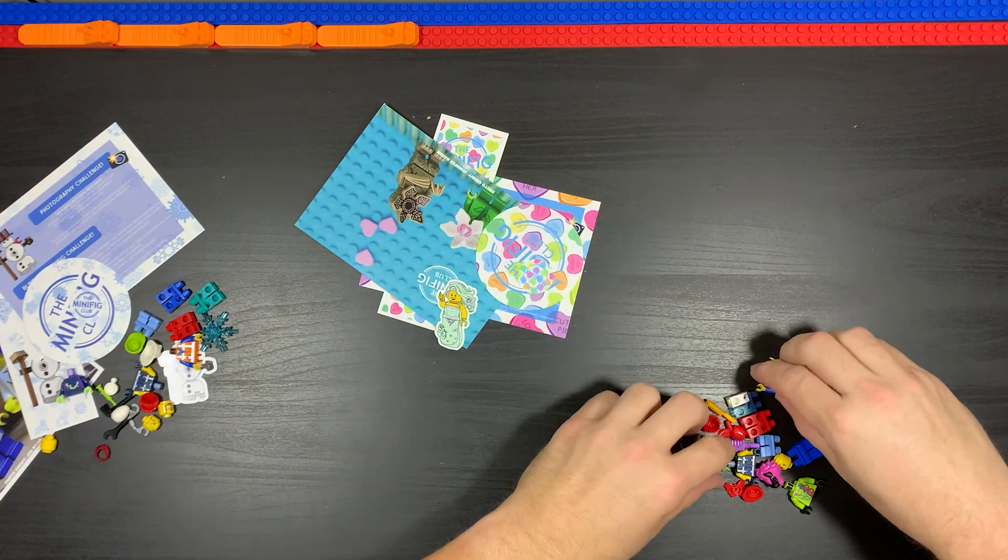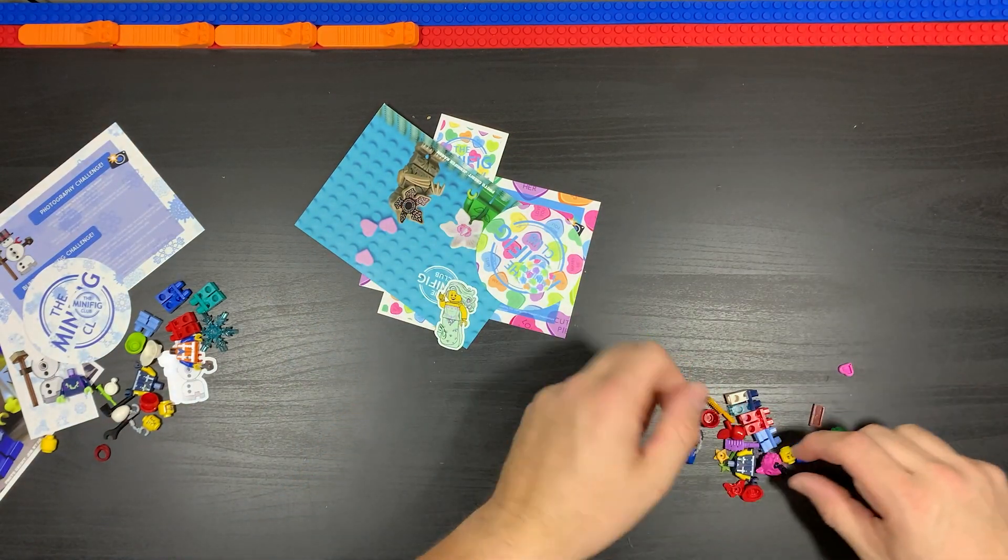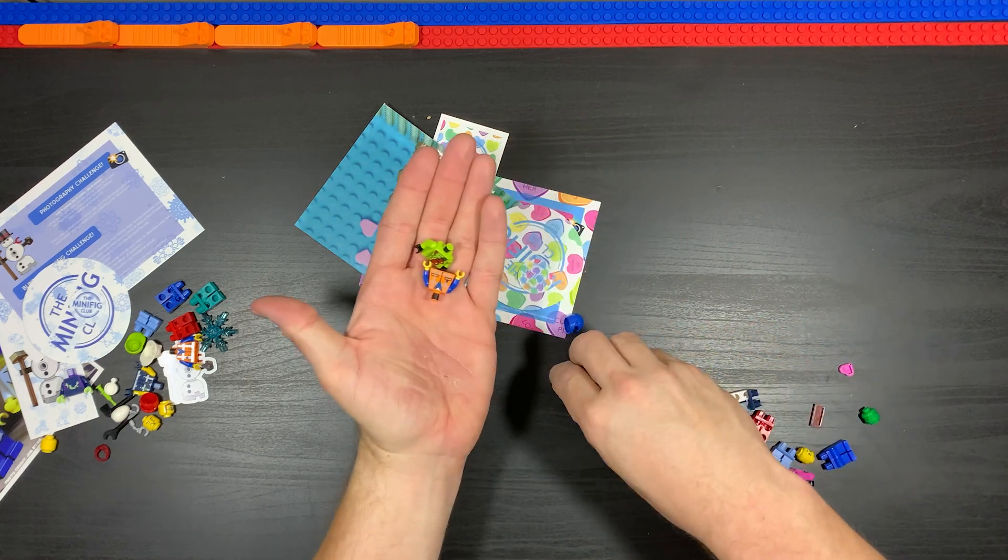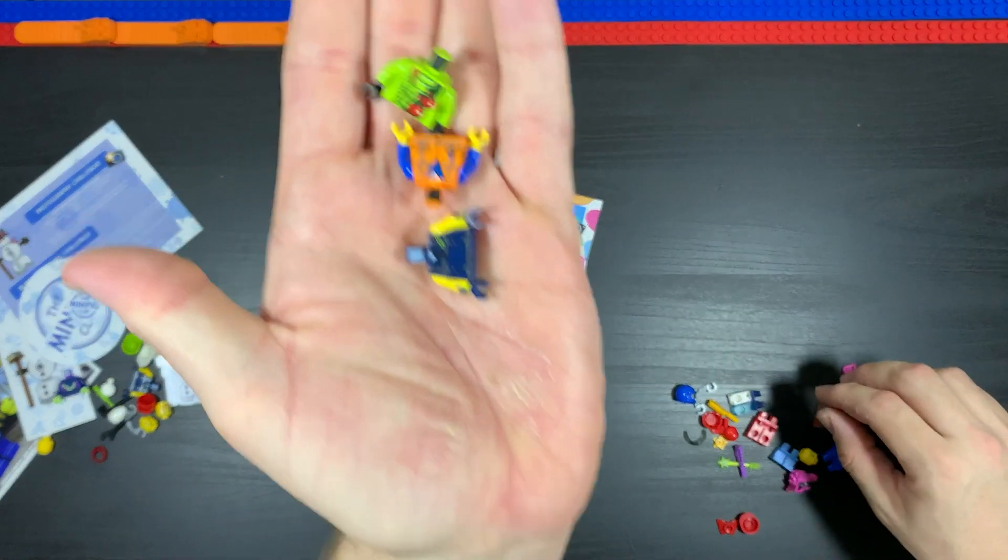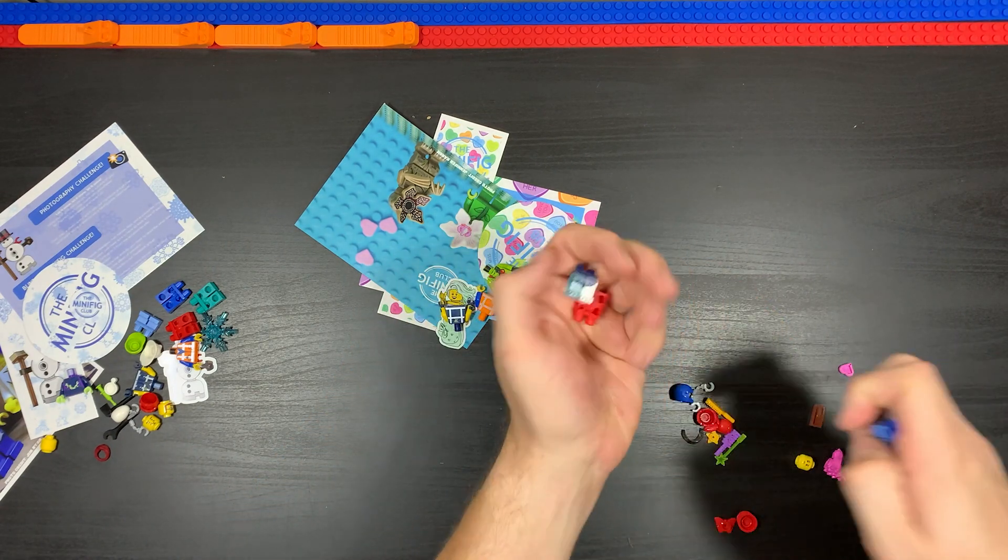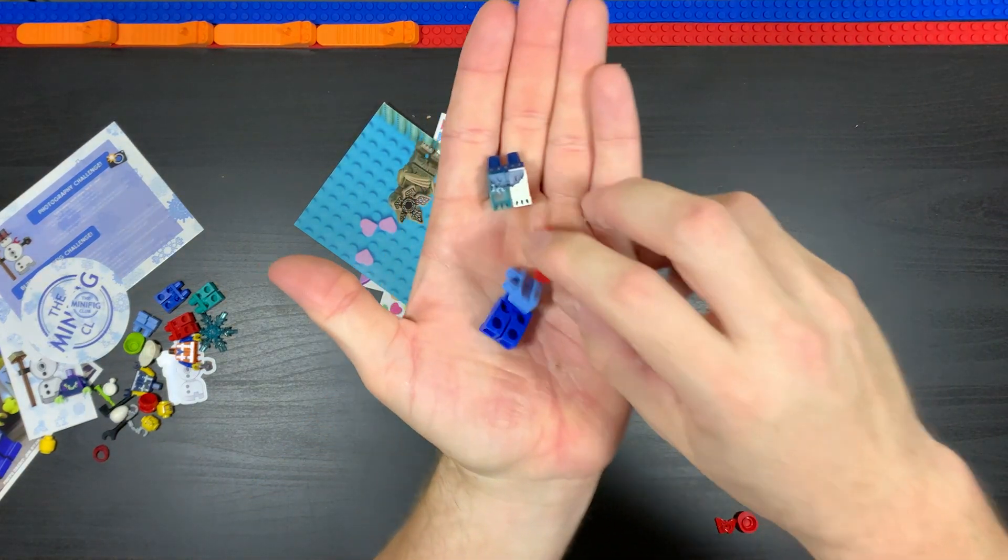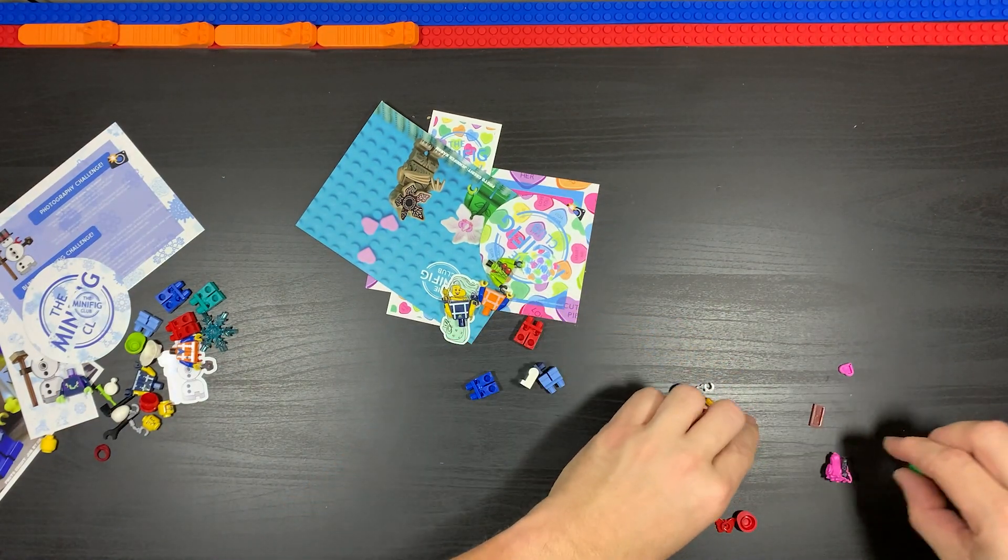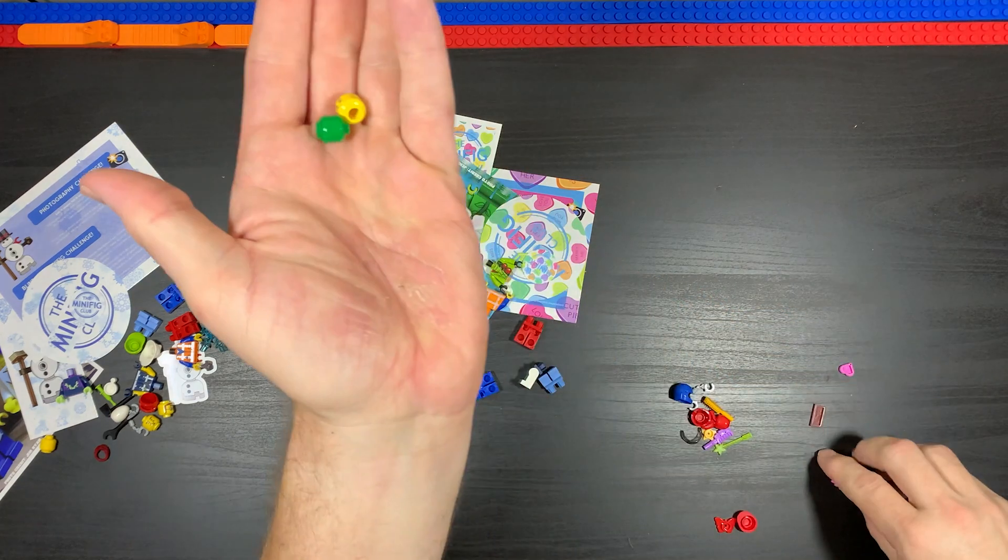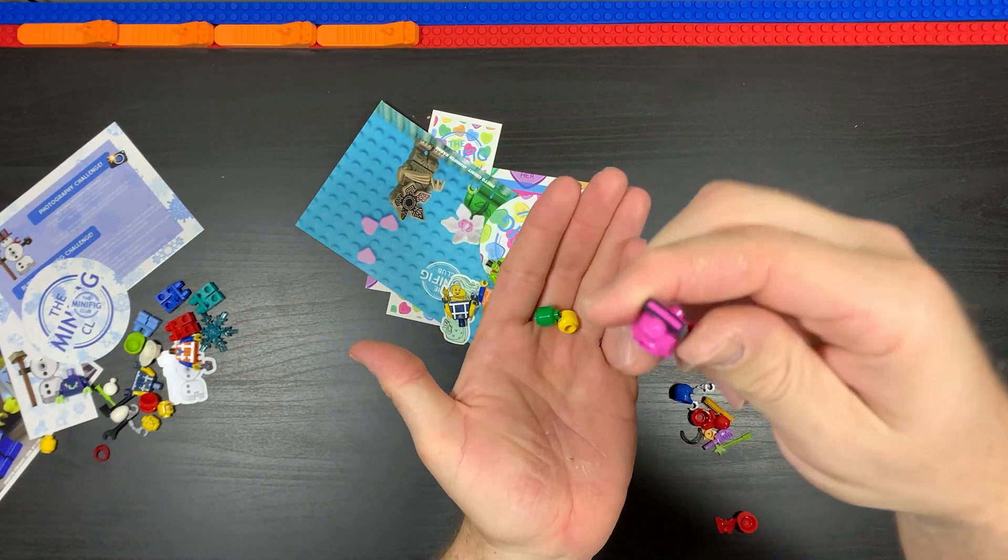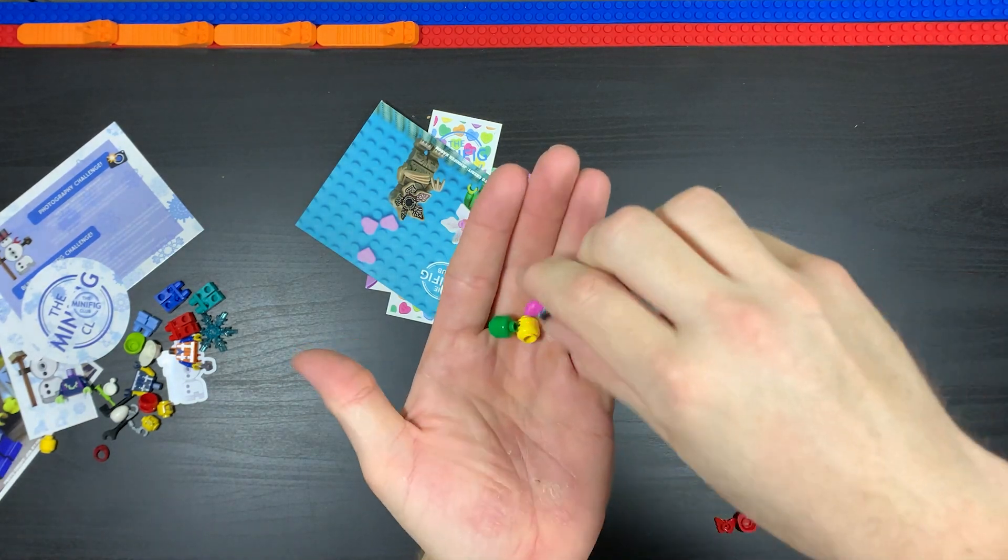We get our nice minifig stuff. This time we got three torsos, like normal. Then we got ourselves four sets of legs. This one's kind of different, that's kind of cool, and a stubby set of legs. We got this time two regular minifig heads and then this one here, which I don't know what that one's from.